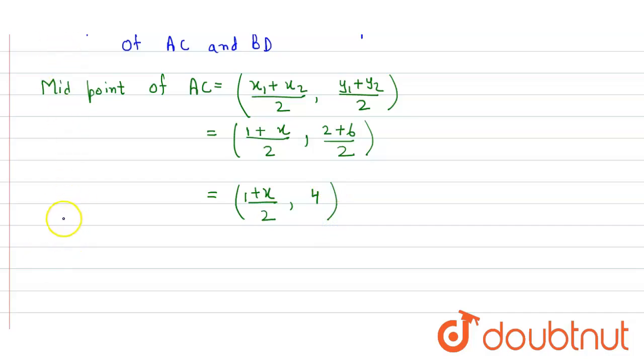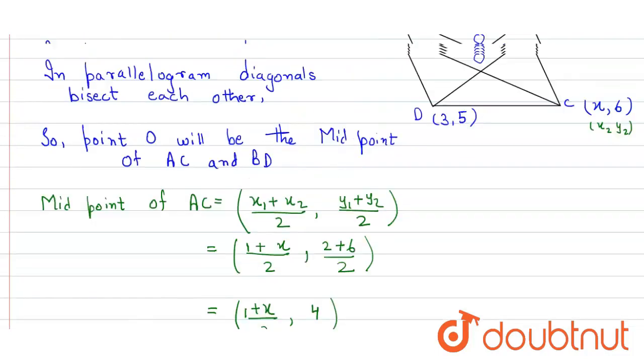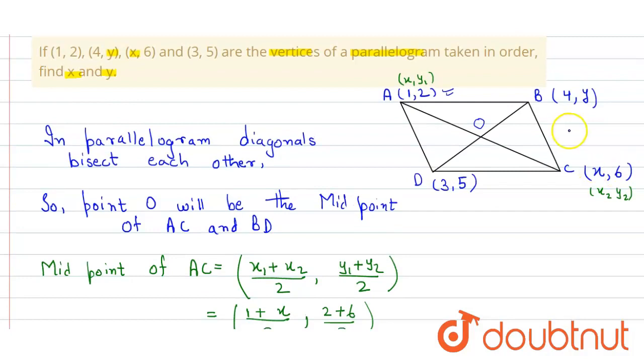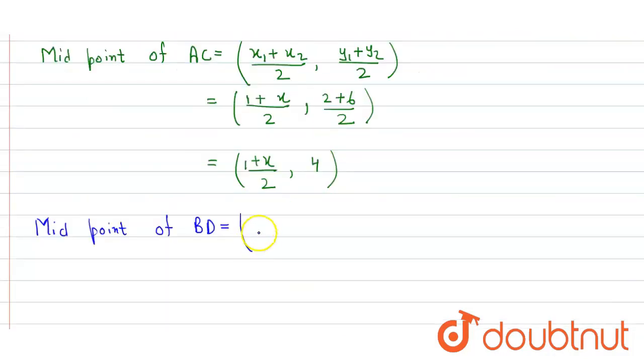We find out the midpoint of diagonal BD. We apply the same formula. So BD will be 4 plus 3 divided by 2 for the x coordinate.